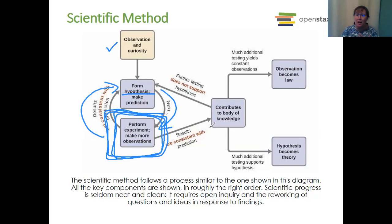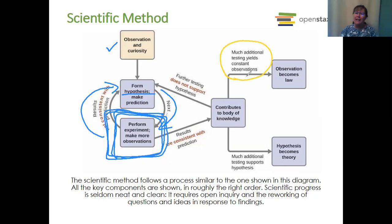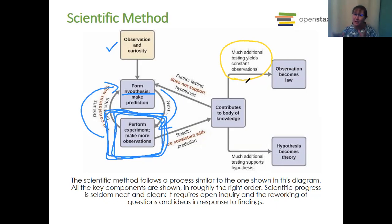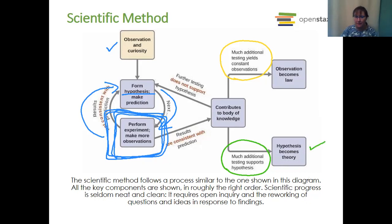After doing this many times, we see that we get constant observations — think of the law of gravity. No matter how many times you drop an apple from a tree, it falls to the ground. That's why gravity is a law: it summarizes what happens every single time. Another option is that much additional testing supports our hypothesis explaining why — in that case, the hypothesis becomes a theory. And again, why versus what. After it becomes a theory, we're not done. Once it becomes a law, we're pretty much done — all we're saying is what happens. But with a theory, there should constantly be new data and continued experimentation.